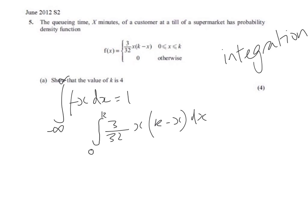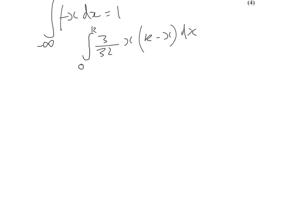I'm going to take the 3 over 32 out of the integration, as this will make it easier for us. The limits are between 0 and k, and then if I expand what we do have left, we've got kx minus x squared. And, of course, this equals 1.